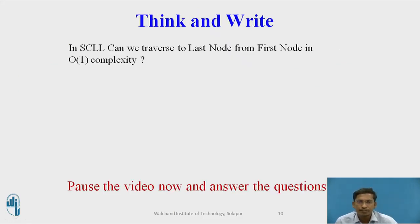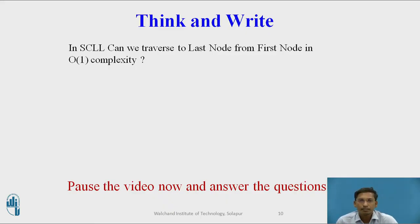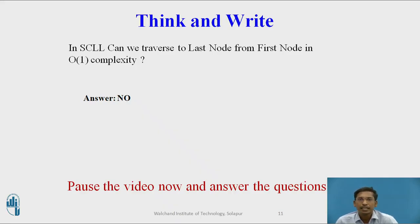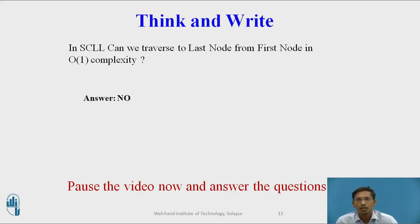You can pause and answer this question: in a singly circular linked list, can we traverse to the last node from the first node in O(1) time complexity? The answer is no. In a doubly circular linked list, using the previous pointer, it is possible to reach the last node from the first node in O(1) time complexity. But in a singly circular linked list, it is not possible — you have to traverse from the first node to the last node one step at a time.